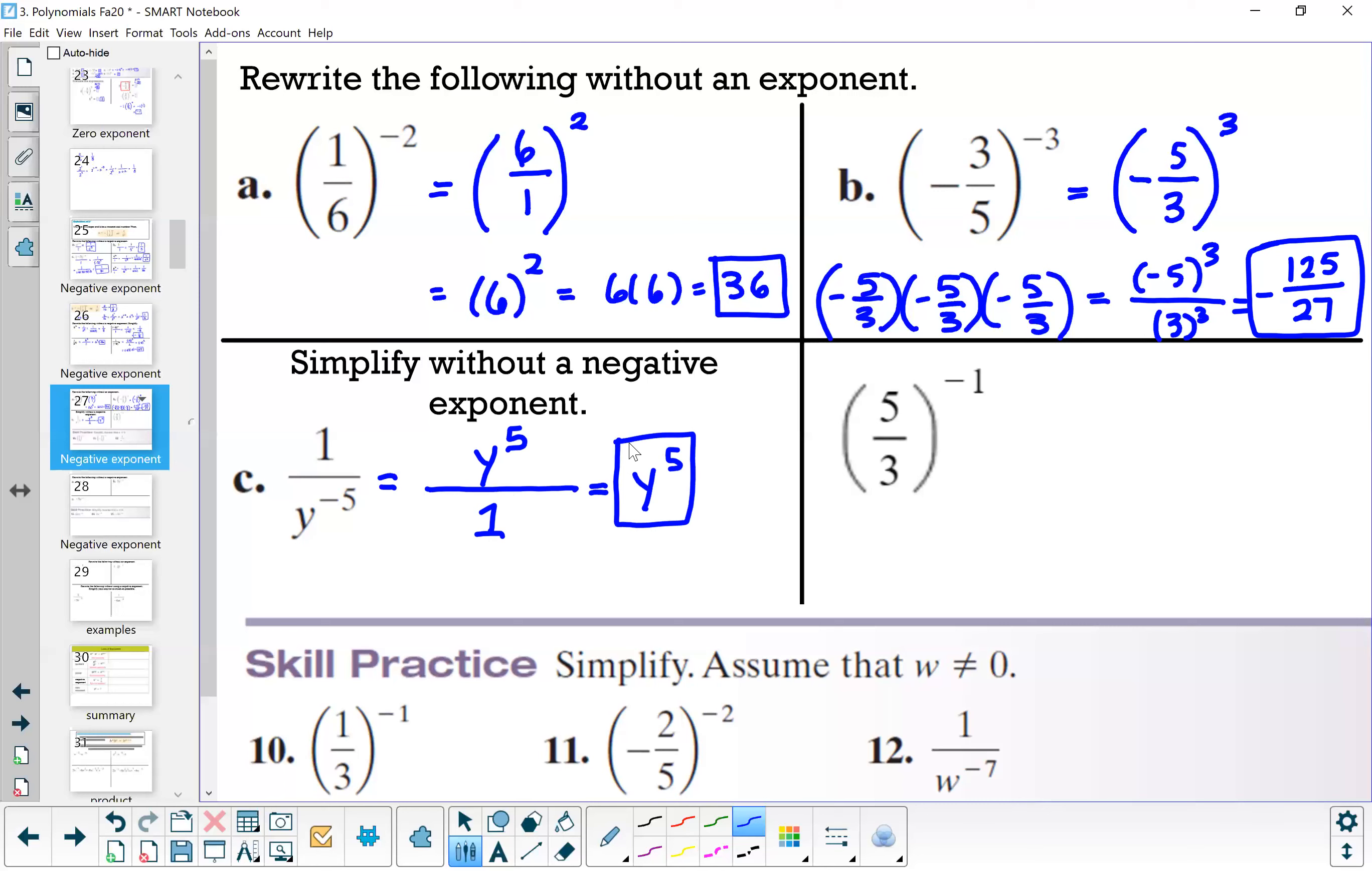All right, our fourth one here: we have in parentheses 5/3, closed parentheses to the power of negative 1. So if I take the reciprocal of our base, which is 5/3, I get 3/5. And therefore my negative 1 exponent is now positive 1, which I don't need to write. So I can write my answer just as 3/5.